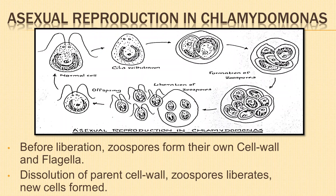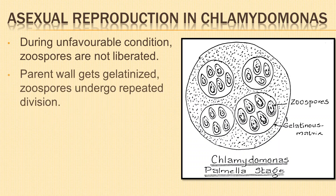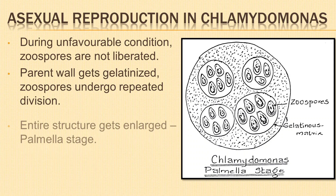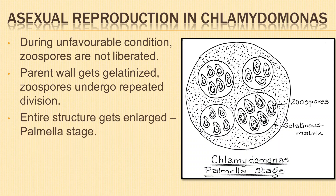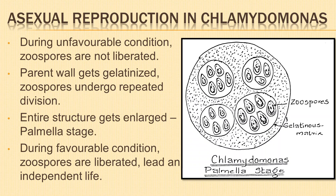Each zoospore behaves like a new Chlamydomonas cell. During zoospore formation, if unfavorable conditions occur, the zoospores are not liberated. Instead, the parent wall gets gelatinized and zoospores undergo repeated division; the entire enlarged structure is called the palmella stage. During favorable conditions, the zoospores are liberated and lead an independent life.